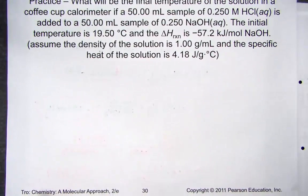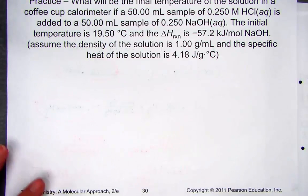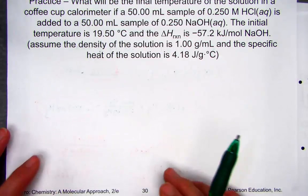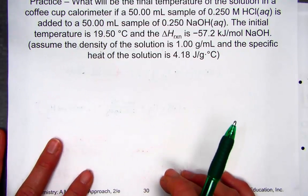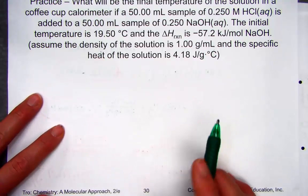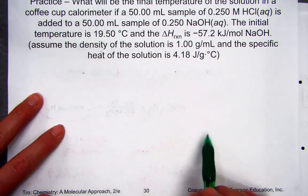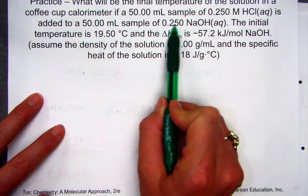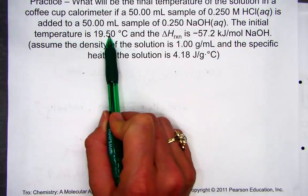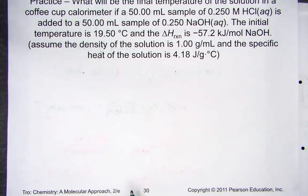Let's try another. What will be the final temperature of a solution in a coffee cup calorimeter when 50 mL of hydrochloric acid is added to 50 mL of base? The initial temperature is 19.5 degrees Celsius, and the heat of reaction is 57.2 kilojoules per mole of sodium hydroxide.